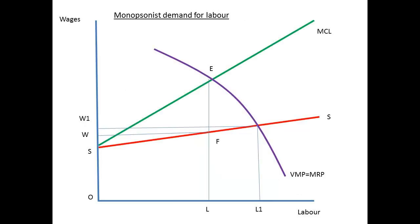The term monopsonist is used where there is only one buyer of labour in a particular market. L units of labour will be employed where the marginal cost cuts the marginal revenue product and also the VMP line, with the wage rate being W. In a perfectly competitive case, the intersection of SS with the marginal revenue product would allow L1 units of labour at the higher rate of W1.